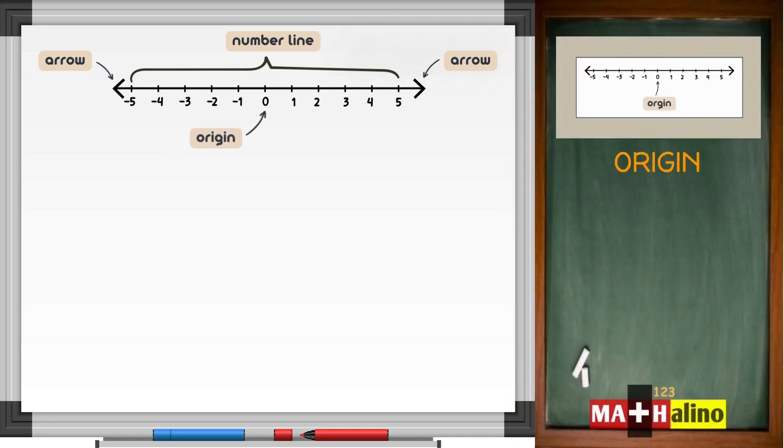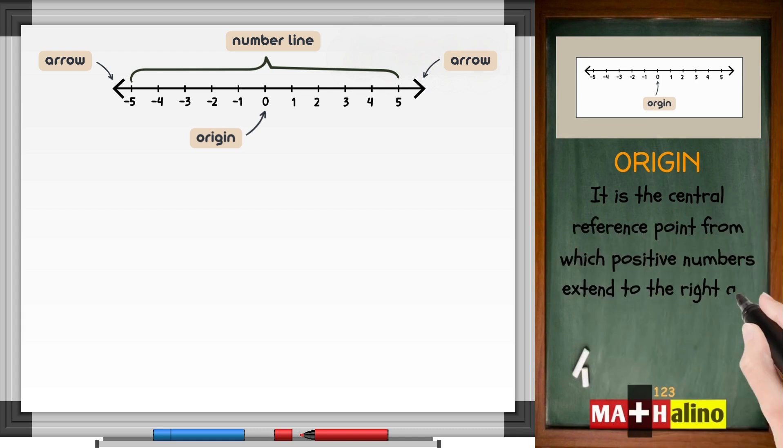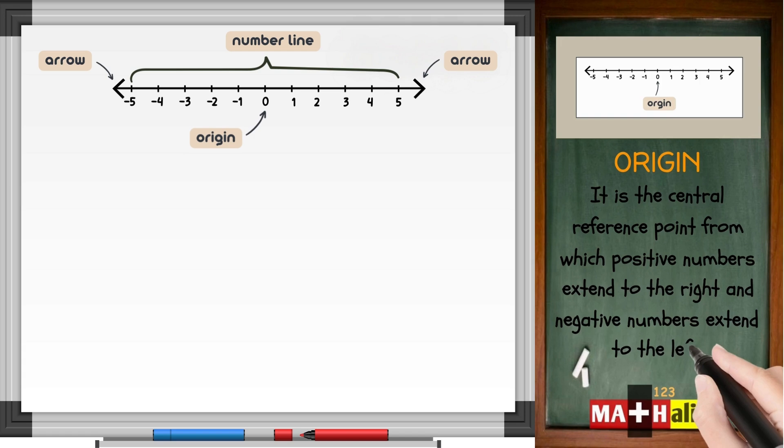Origin. It is the central reference point from which positive numbers extend to the right and negative numbers extend to the left.